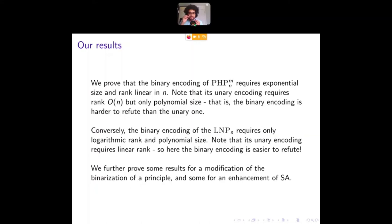But the least number principle is different. Because the least number principle requires, it doesn't need a lot of rank. It needs only logarithmic in N rank. And small size. However, it's unary version requires linear rank. This is shown elsewhere. So the least number principle, its binary encoding is easier than the unary one.